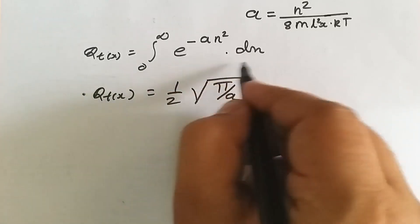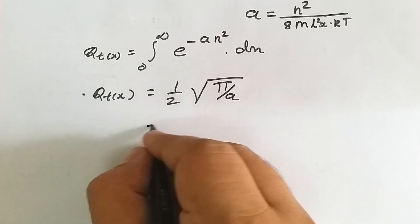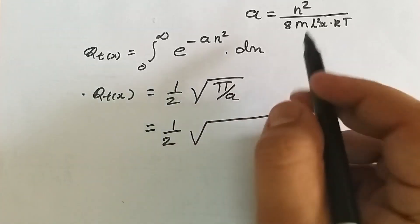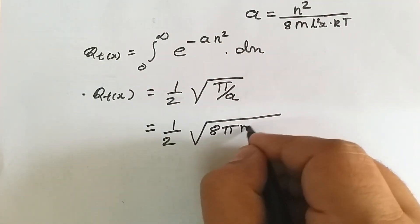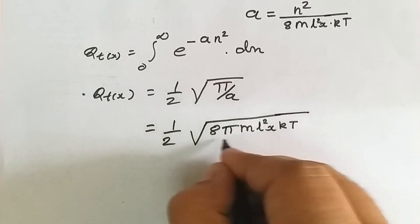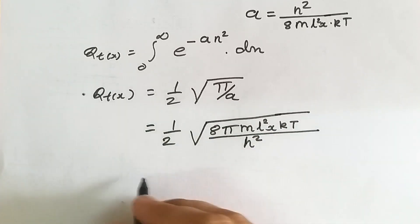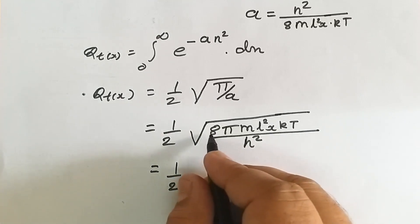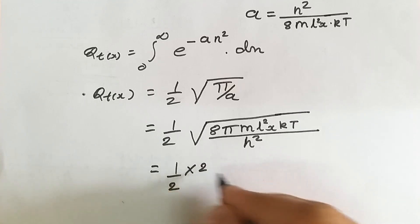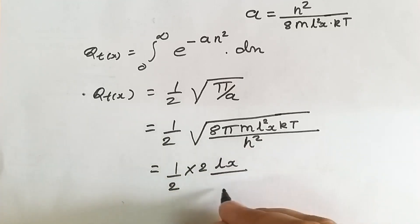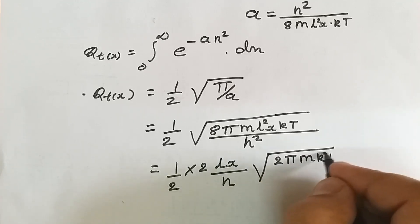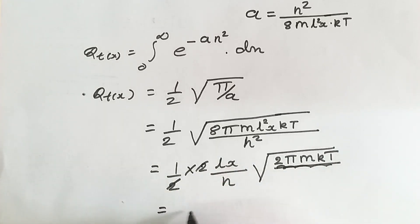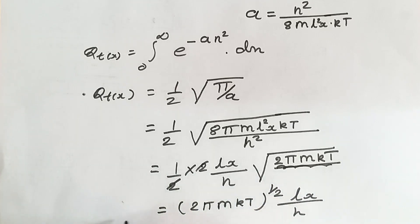The solution of this type of Gaussian integral from calculus gives qt_x equals one half times the square root of pi over a. When we substitute the value of a, the denominator goes to the numerator, giving the square root of 8 pi m L_x squared kT upon h squared. Simplifying — writing 8 as 2 times 4, taking L_x and h outside the square root — we get qt_x equals (2 pi m kT) raised to 1/2 times L_x divided by h.